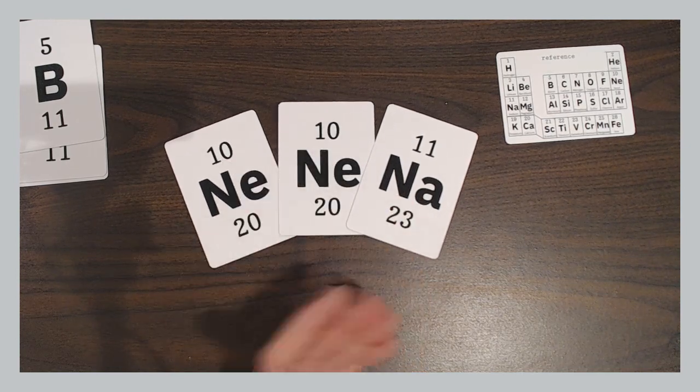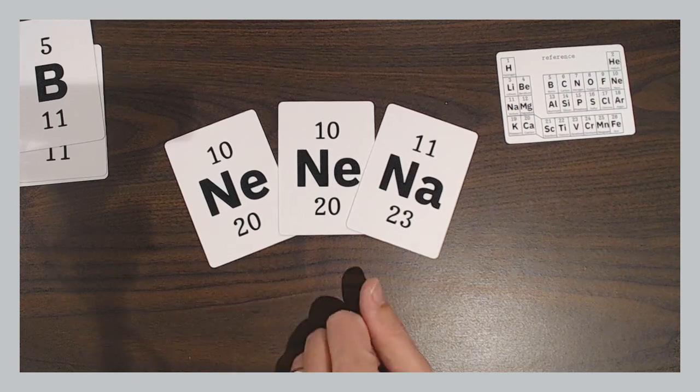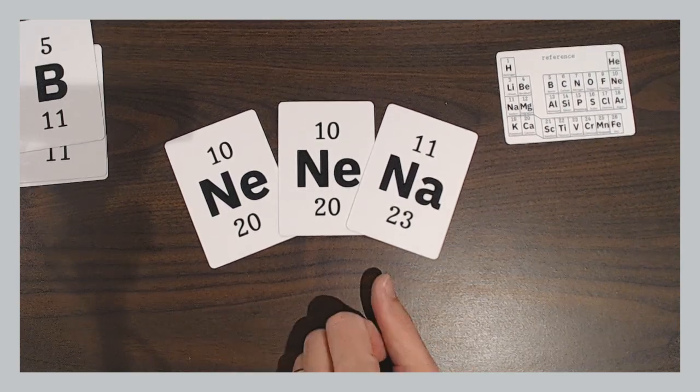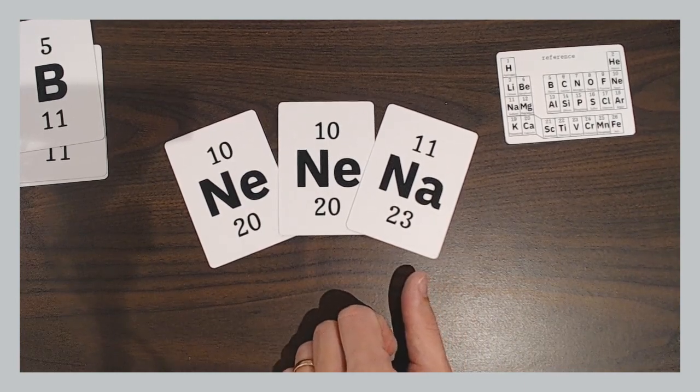If you don't want to do it with multiplication, you could do it with adding. First one to add 20 plus 20 plus 23 gets those points. Many different variants. It's all explained in those rules that come with the game.